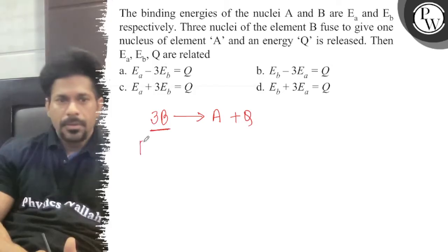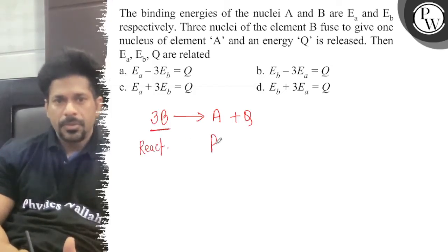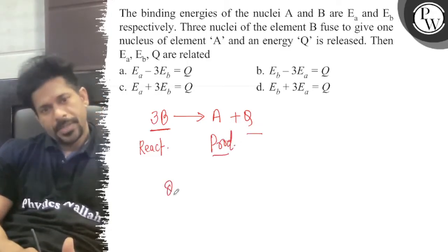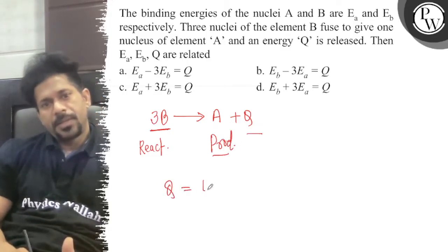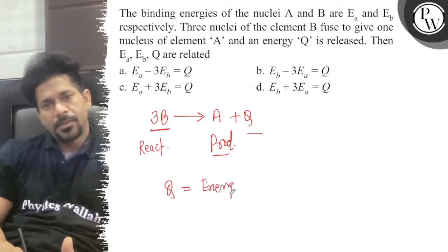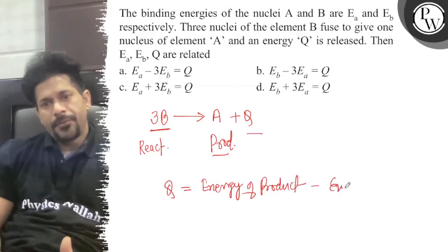This is your reactant, right? And this is your product and that is your energy. So that energy is given by the energy of product, energy of product minus the energy of reactant.